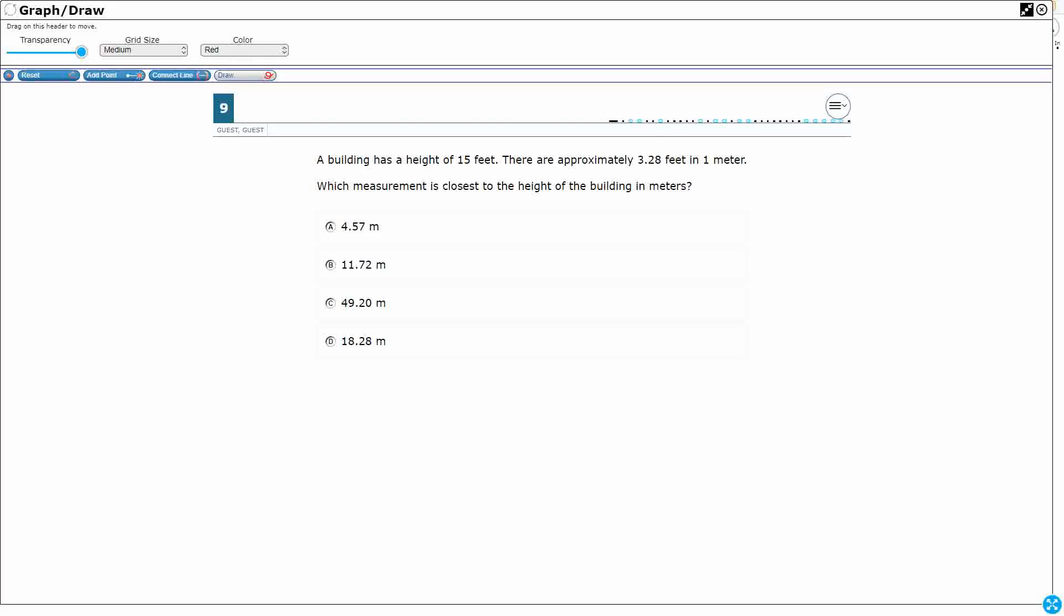All right, so we have a building that has a height of 15 feet. That is a very small building, so we're assuming that is a one-story building. So we'll just say this right here is 15 feet. So there are approximately 3.28 feet in one meter. So let's put that right here. 3.28 feet equals one meter.